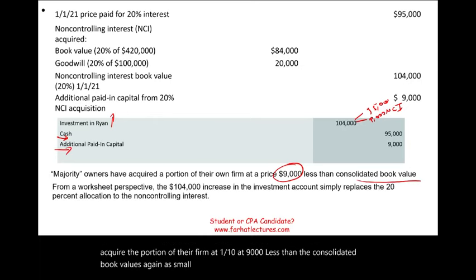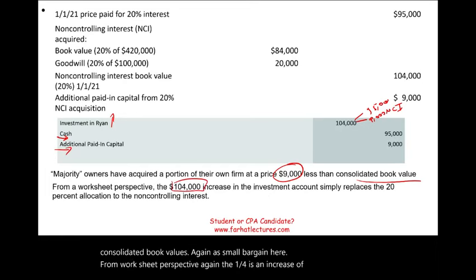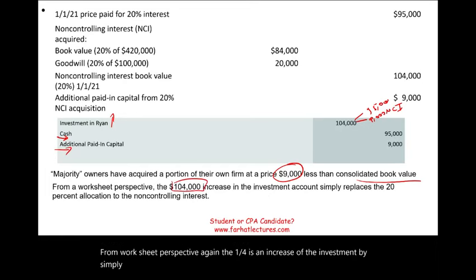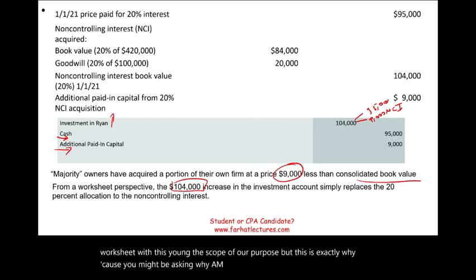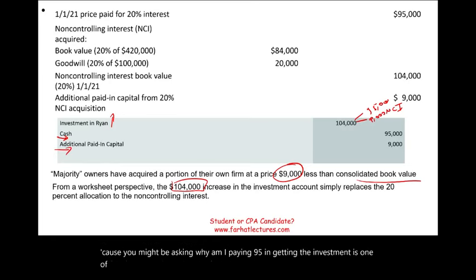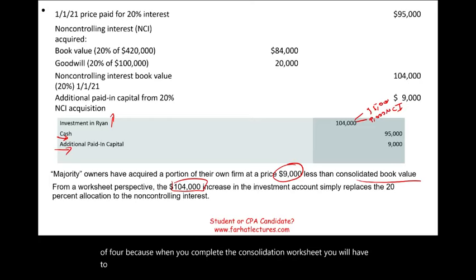From a worksheet perspective, the $104,000 is an increase of the investment by simply reducing NCI — we're going to be reducing NCI when we complete the worksheet. This is exactly why, because you might be asking: why am I paying $95,000 and getting the investment as $104,000? Because when you complete the consolidation worksheet, you will have to reduce NCI, and it's increased against the investment by $9,000.